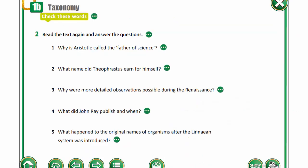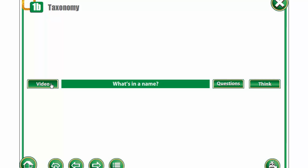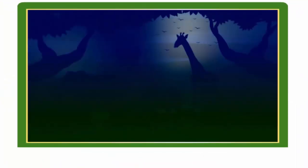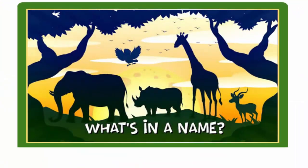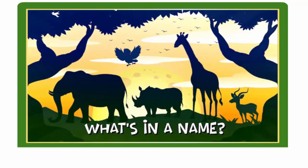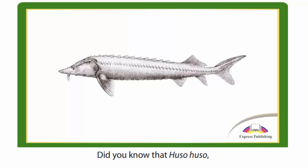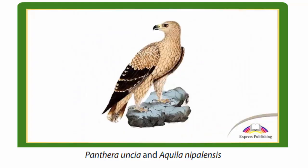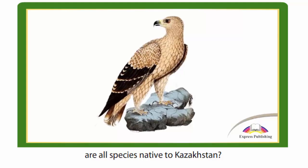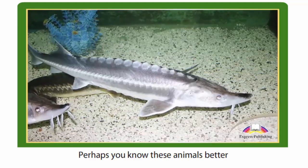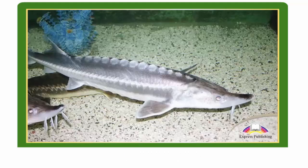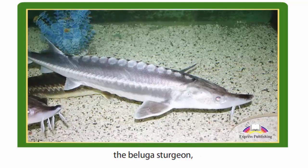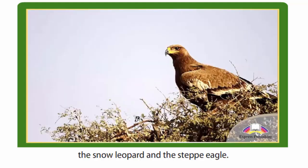Now let's watch the video and read the text. What's in a name? Did you know that Huso huso, Panthera uncia, and Aquila nipalensis are all species native to Kazakhstan? Perhaps you know these animals better by their common names: the beluga sturgeon, the snow leopard, and the steppe eagle.